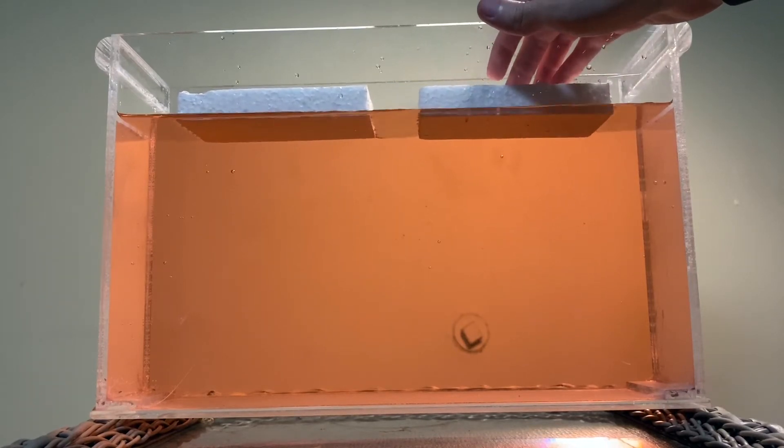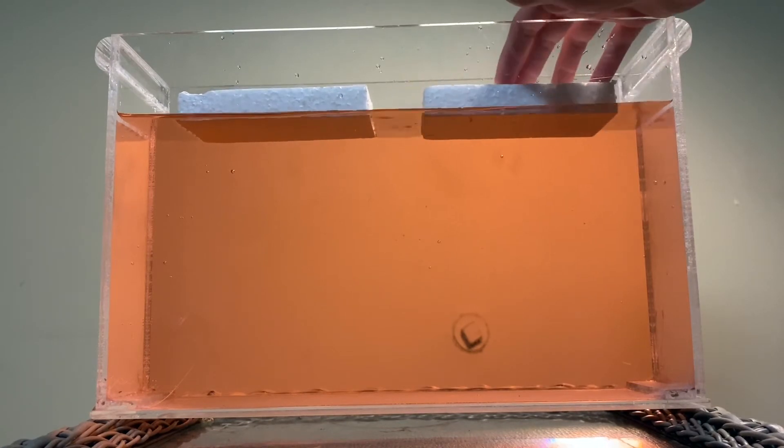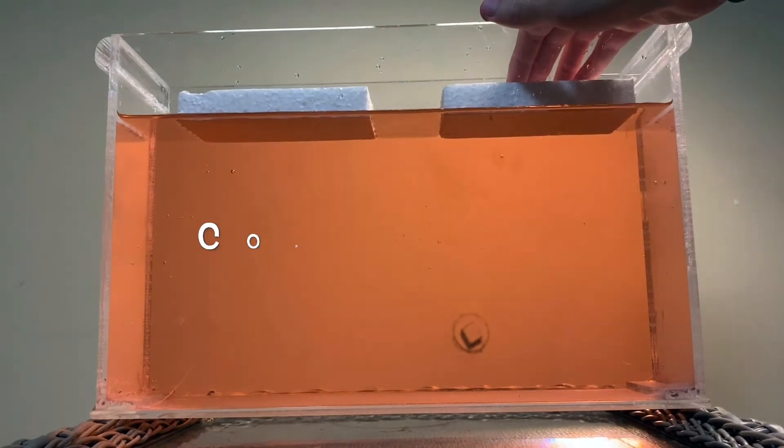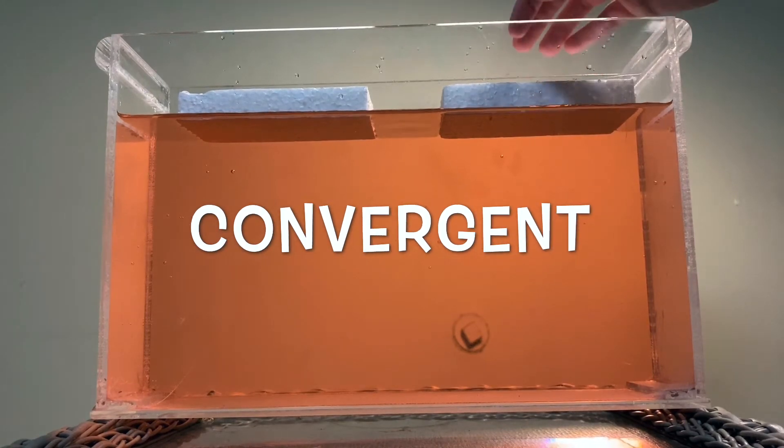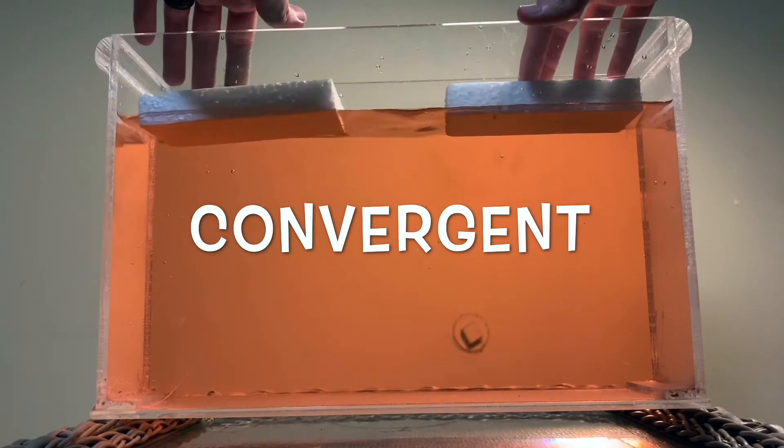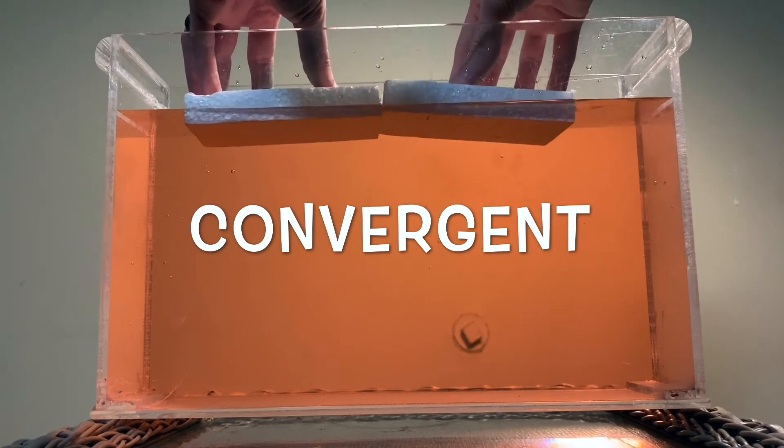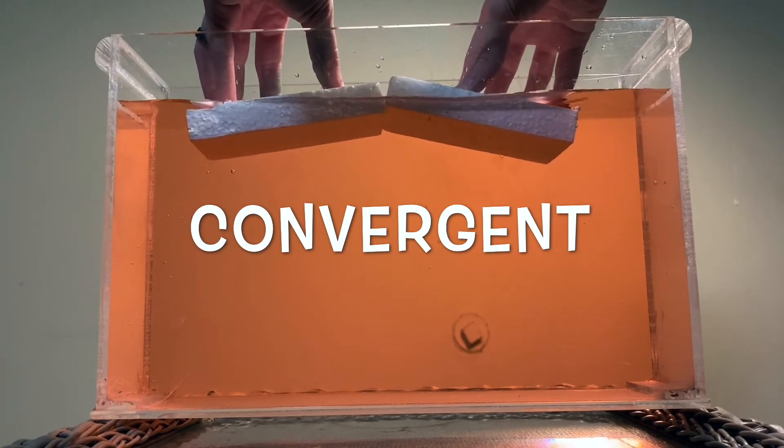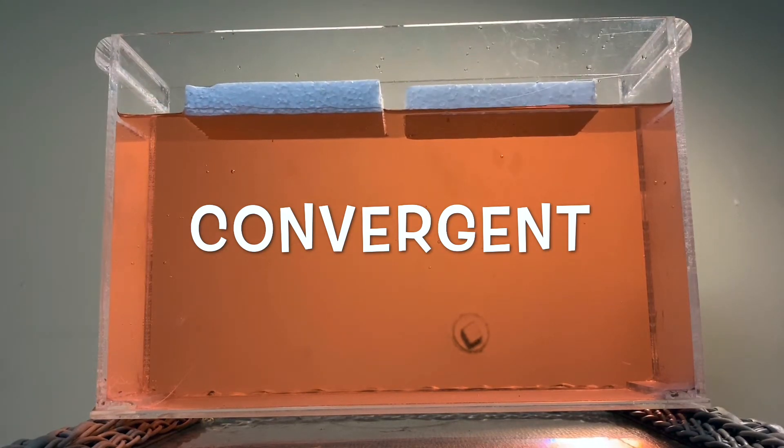So we're going to look at a couple boundaries using this tank experiment. One is going to be a convergent boundary. So at a convergent boundary, you have two plates. We'll picture these as maybe two continental plates colliding. And when they collide, they actually will rise and form usually mountains. This is where we get something like the Himalayas, where we have Mount Everest.